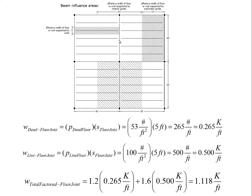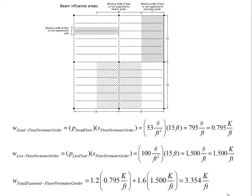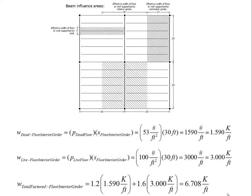We wrote out equations from those values. The only conversions we've had to deal with so far are converting pounds to kips. There are no special conversion factors, so the mathematics is very simple — multiply one number times another and do the conversion if needed. We did that for the floor joist, floor perimeter girders, and floor interior girders, and left the roof calculations as a student exercise.